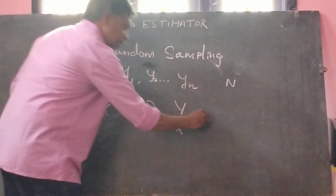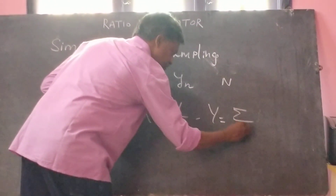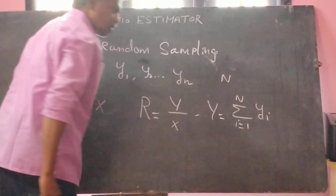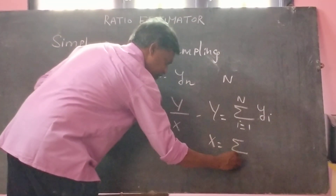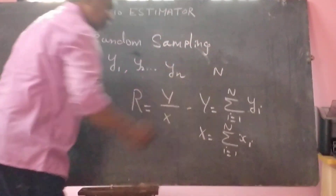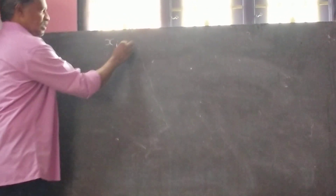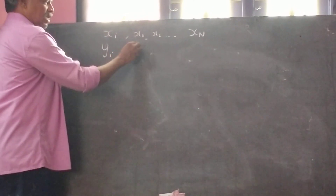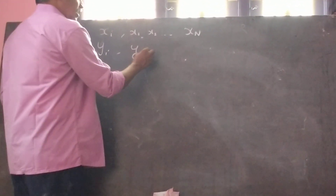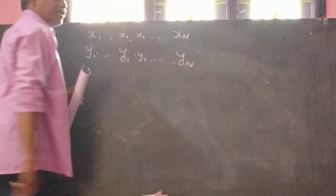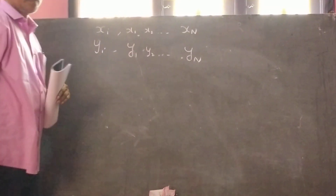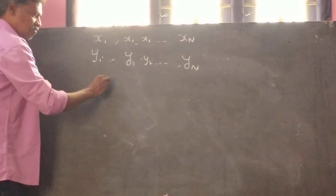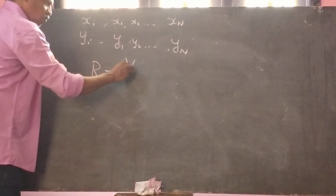We use the formula R equal to capital Y divided by capital X. Here, capital Y is nothing but summation i equal to 1 to capital N of small yi, and capital X is nothing but summation i equal to 1 to capital N of xi. Here xi are the values of the population of the auxiliary variable, that is x1, x2, etc., xN. And small yi are the values of the main variable of the population, that is y1, y2, etc., yN. We consider the size of the population is capital N. So based on the available information, we find the ratio R equal to capital Y divided by capital X.